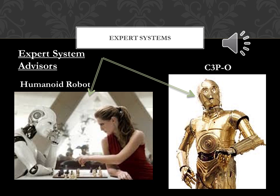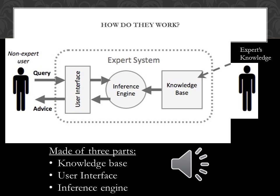An expert system is a computer software that is programmed to act like a human expert on a particular subject area. They can often be used to advise non-experts in situations where a person is not there to help them. An expert system is made up of three parts: a knowledge base, a user interface, and an inference engine.